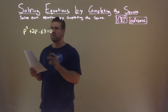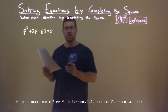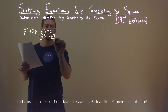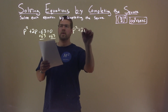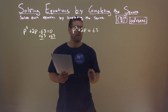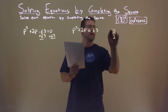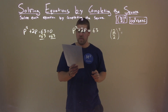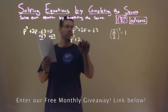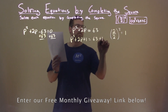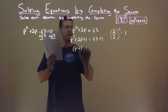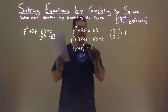We're given this problem right here: p squared plus 2p minus 63 equals 0. We want to solve this by completing the square. I'm going to add 63 to both sides, leaving me with p squared plus 2p equals positive 63. I'm going to look at my B value, which is 2. Dividing by 2 and squaring it comes out to be 1. So I'm going to add 1 to both sides: p squared plus 2p plus 1 equals 63 plus 1. The left-hand side is a perfect square — p plus 1, all squared — equals 63 plus 1, which is 64.